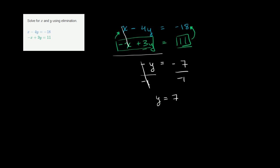But we aren't done yet. We need to figure out what x is equal to. So we can take this value for y, and we should be able to substitute it back into either of these equations to solve for x. So let's do that. Let's use the top equation. So we have x minus 4 times y. But now we know that y is 7. We know that y is 7 at the point that satisfies both of these equations. 4 times 7 is equal to negative 18.